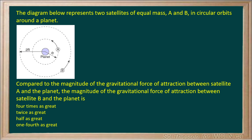First thing to do here is to write down our law of universal gravitation. The force of gravity is equal to G, the gravitational constant, times the mass of one object, times the mass of the other, divided by the distance between them, squared. We see that the force of gravity is inversely proportional to the distance between the masses, squared.